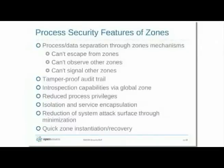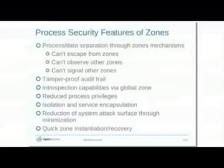Each zone has an upper limit called the privilege limit — the maximum privilege set available to any process, even super user, running in that zone. No process in a non-global zone ever has as much privilege as the global zone. They're always running with reduced privilege, and you can further reduce those privileges if you have a specific purpose for your zone where you don't need any super powerful processes. It prevents the process from asserting more privilege than the zone has, so even root is limited by the zone's privilege limit.